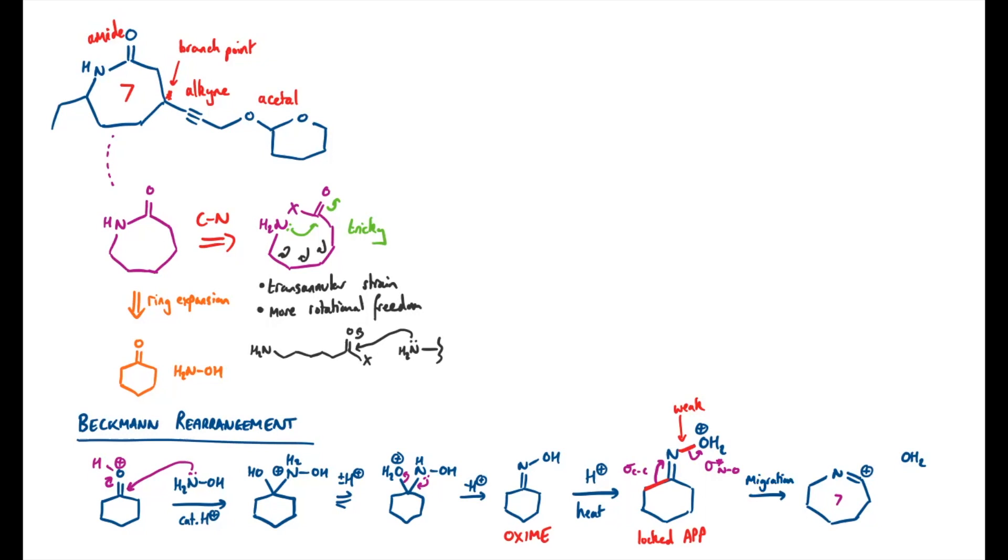Once we form the slightly strained carbocation the water molecule can then come in and after a few proton transfers we'll end up with the amide product, specifically that's the one with the star here that we were considering right at the top.